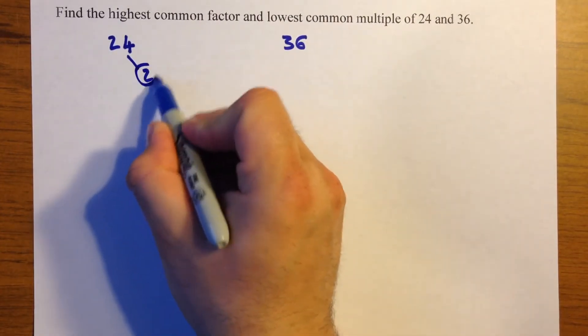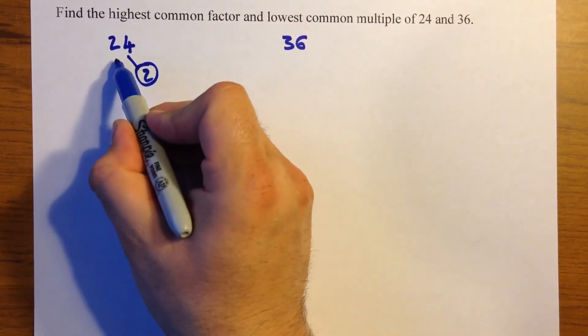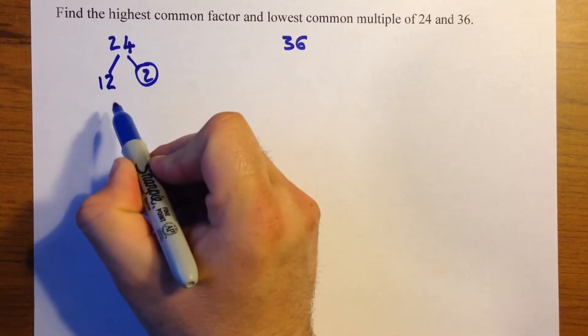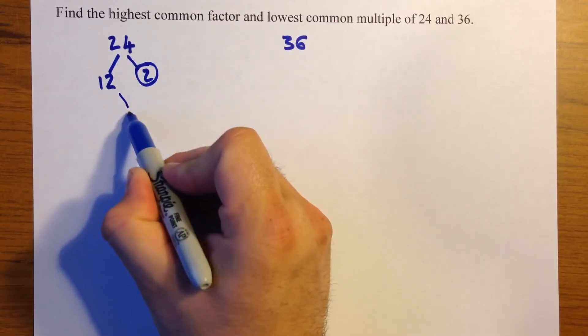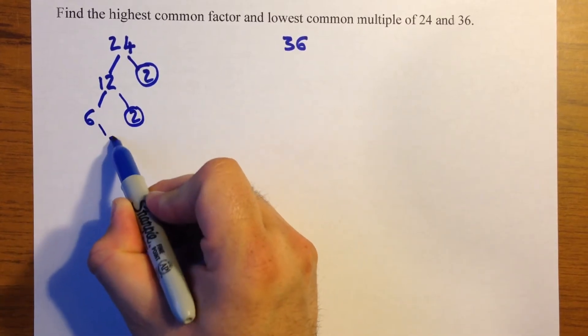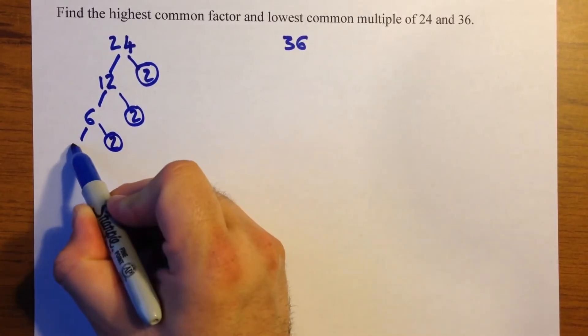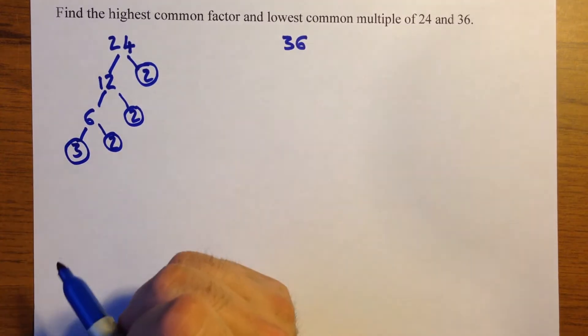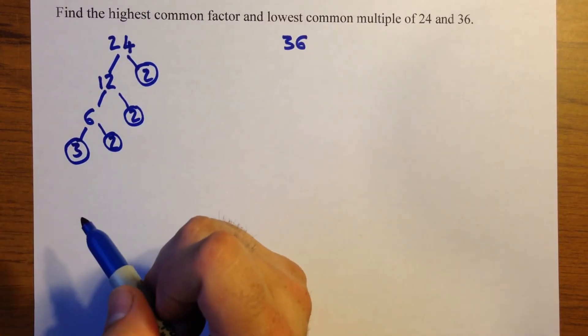So divide by 2 and circle that because it's a prime number. That leaves us with 12. Divide by 2 again. That leaves us with 6. Divide by 2 again. Leaves us with 3. And 3 is a prime number so that's us finished with 24.